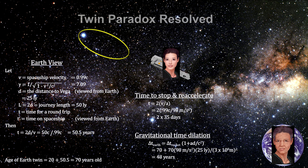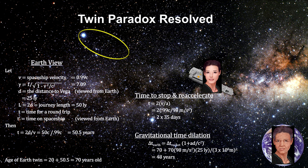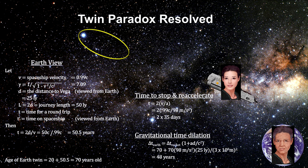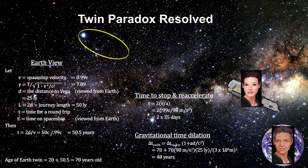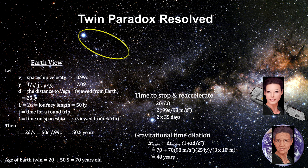The twin on Earth agrees. So instead of both twins thinking the other should be younger, they both agree that the twin on the rocket to Vega and back is younger. No contradiction is involved, and the paradox is resolved.